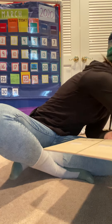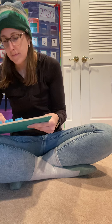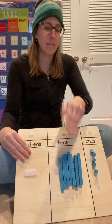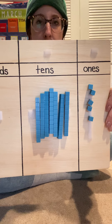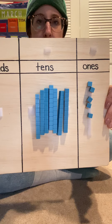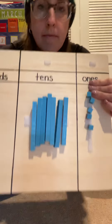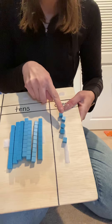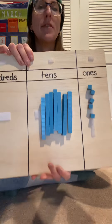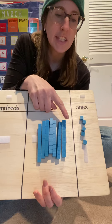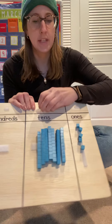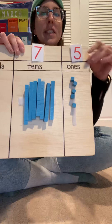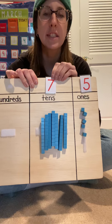All right, I'm going to take the numbers off. Ready? How many? Let's count together. Ten, 20, 21, 22, 23, 24, 25, 26, 27, 28. How many in the tens place? 1, 2. How many in the ones place? 1, 2, 3, 4, 5, 6, 7, 8. Two tens and 8 ones equals 28.